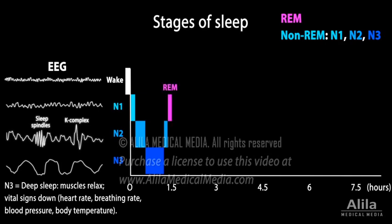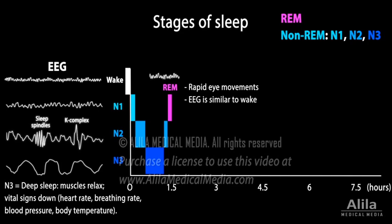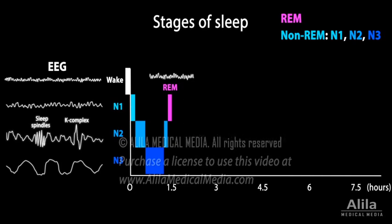As its name suggests, REM sleep is characterized by rapid eye movements under the eyelids. REM sleep is also known as paradoxical sleep because the brain's EEG is very similar to that of the waking state. REM sleep is when most dreams occur. Vital signs are up, but there is a total inhibition of skeletal muscles which prevents sleepers from acting out their dreams.